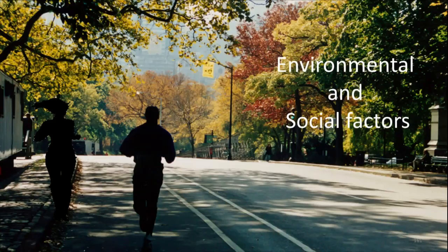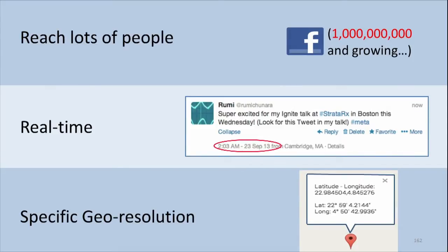At the same time, by going right to individuals, there are a lot of things we can measure that we were previously unable to measure, such as aspects of the environment and other social factors that actually relate to disease — especially chronic diseases. We can also reach a lot more people compared to the tens, hundreds, and thousands of people reached by current studies. We can look at things in very real time, and we can get very specific geo-resolutions, so we know exactly where things are happening.